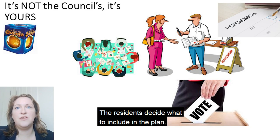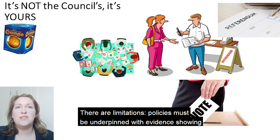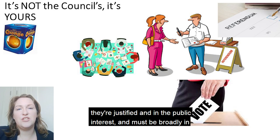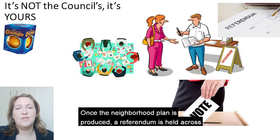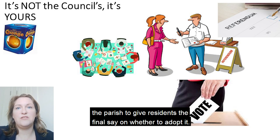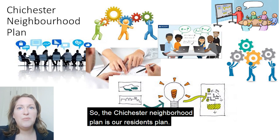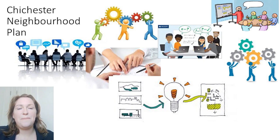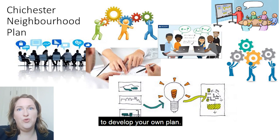The residents decide what to include in the plan. There are limitations — policies must be underpinned with evidence showing they're justified and in the public interest, and must be broadly in accordance with local plan strategic policies such as housing numbers. Once a neighbourhood plan is produced, a referendum is held across the parish to give residents the final say on whether to adopt it. So the Chichester neighbourhood plan is our residents' plan. The role of the City Council is to facilitate our residents to develop your own plan.